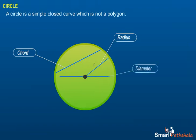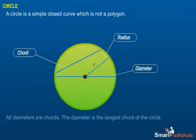The chord is a line segment connecting two points on a circle. A line segment which connects two points on a circle and passes through the center is called the diameter. Diameter is double the size of a radius. All diameters are chords. The diameter is the longest chord of the circle.